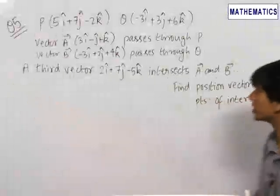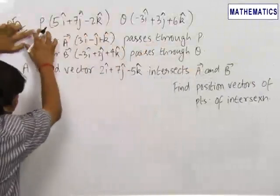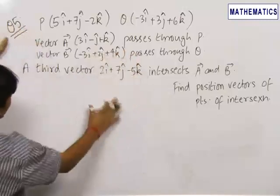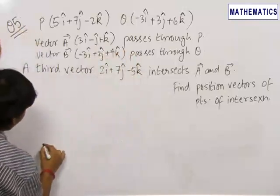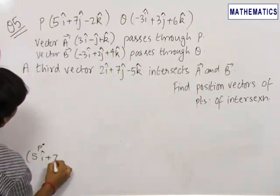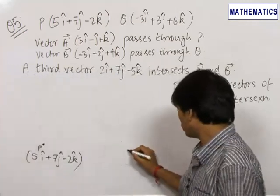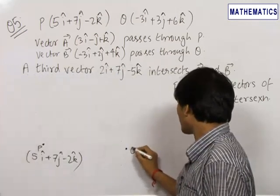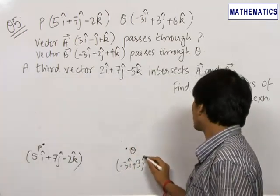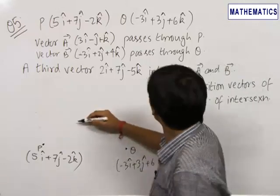The fifth question is an interesting one. We have been given two points P and Q whose position vectors are given as follows. Always draw the diagram in such questions to get a clear idea of what is happening. The point P has position vector 5i + 7j − 2k, and there is a point Q which has position vector −3i + 3j + 6k.